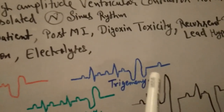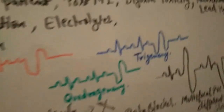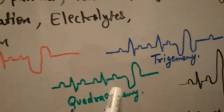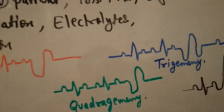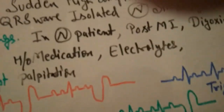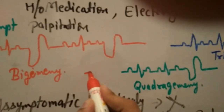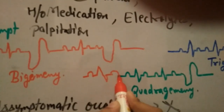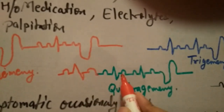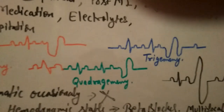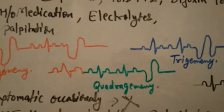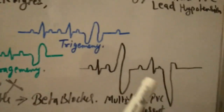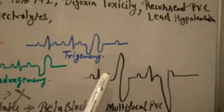Quadrigeminy is a less severe condition and does not require treatment. It looks like a normal PQRS complex, T wave, repeated — with a PVC occurring after every 3 normal beats. So the pattern is 1, 2, 3 normal beats, then 1 PVC — that is quadrigeminy. I hope you understand.